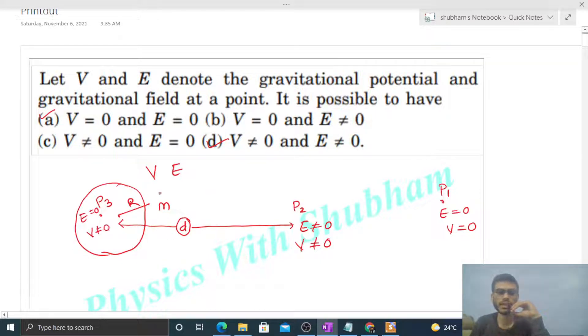So option (c) is also correct. Now for option (b), potential should be zero and field should not be equal to zero. So if we go to some finite distance where field is not equal to zero...